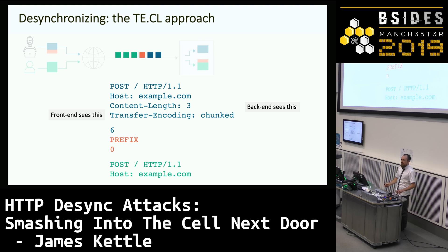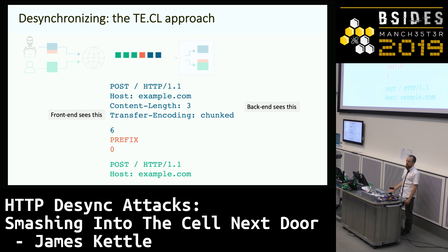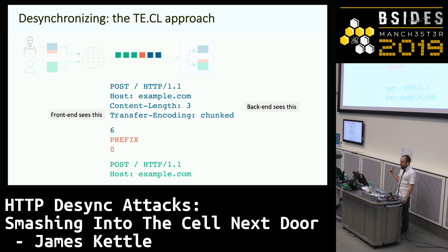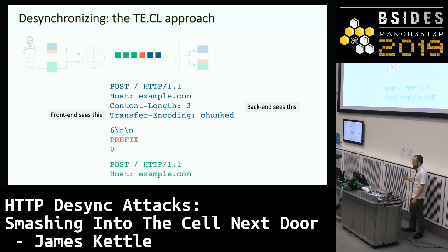But what if the desynchronization happens the other way around — where it's the frontend that looks at the Transfer-Encoding header and the backend that looks at the Content-Length? We can still exploit that by reformatting our request slightly, with the only limitation being that the malicious prefix has to end with a zero followed by a blank line, which generally won't cause us problems. If you're looking at the Content-Length in that request, you might wonder why it's three when there's only one obvious byte of data — that's because every line ends with \r\n, which isn't shown on slides to keep them clear.